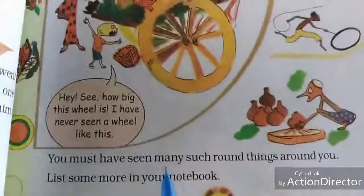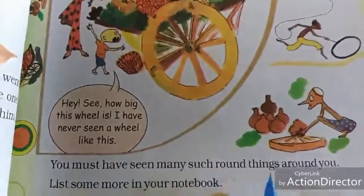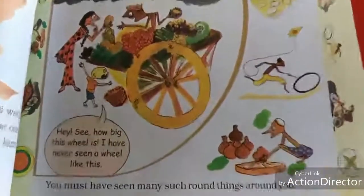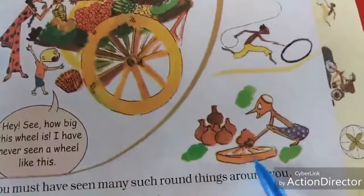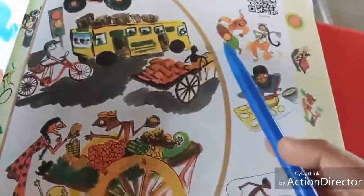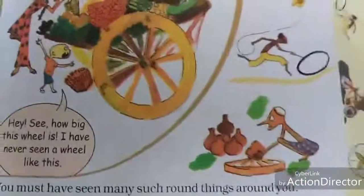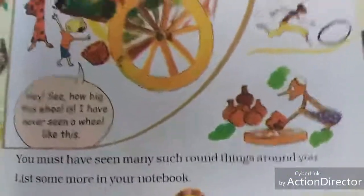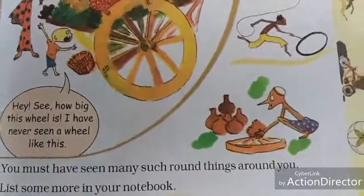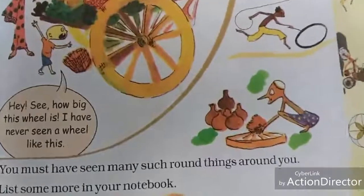You must have seen many such round things around you. See the pot maker — using the wheel he makes pots, and there is chapati and drums too. These are all round things around us. List some more in your notebook.